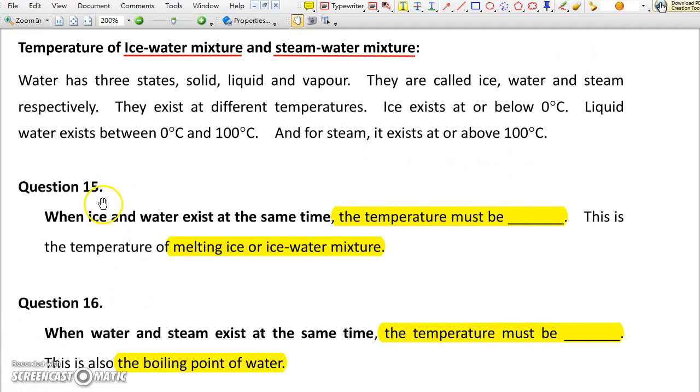In that case, when you see ice and water together in an ice water mixture, then the temperature must be 0 degree Celsius. On the other hand, when you have water and steam together, at that time it must be 100 degree Celsius. That is the boiling point of water.